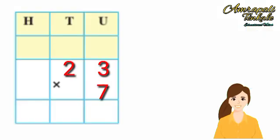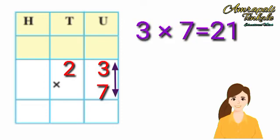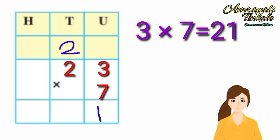23 multiply by 7. First we multiply 3 units by 7. 7 threes are 21. Of these 21 units, we make 2 tens and write them in the tens place. 1 is left in the units place.